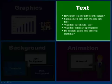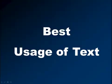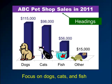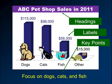Next thing: text. How much text should be on a screen? For me, the best usage of text is really to explain visuals. So you have a great heading, you have your labels which clearly explain what you're looking at, and then you have a key point. Maybe my key point here is to focus on dogs, cats, and fish — we should stop selling turtles and other animals. This is the best use of text in my mind.